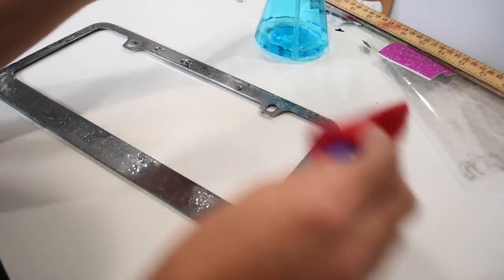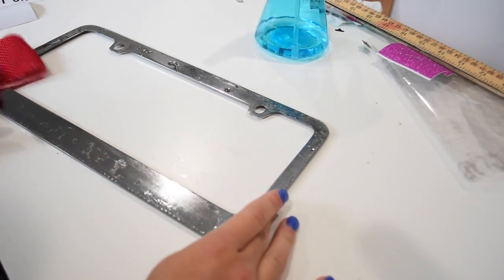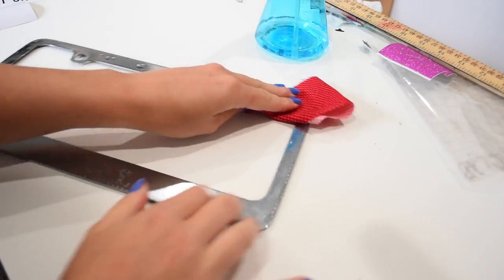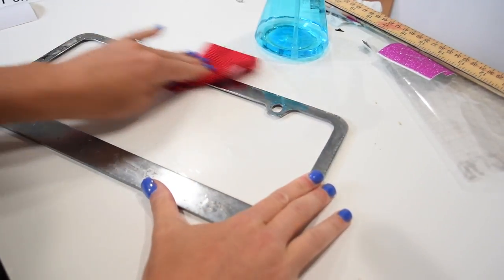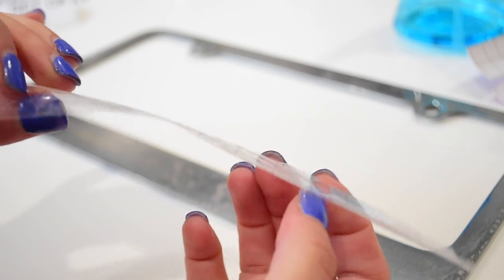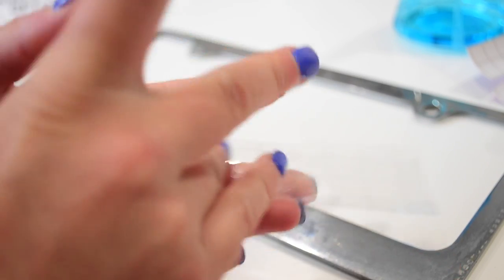So I'm going to clean my surface with my alcohol. And this is an old frame that I used before, so it has some old E6000 already on it, but I figured you won't be able to see that, especially once I put all my crystals on. So I'm just going to use a fabric that doesn't have any lint and clean it off with my alcohol.